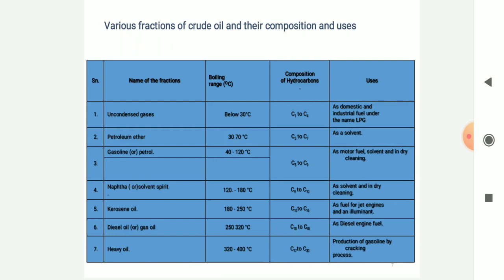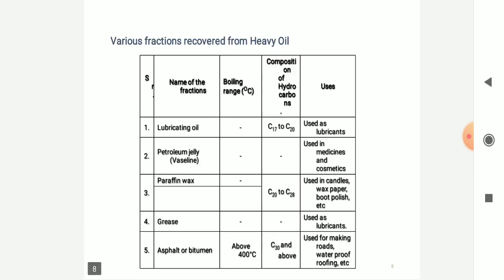Various fractions from crude oil are collected and used in different manners. The tabulated form shows non-combustible gases, petroleum ether, gasoline, naphthalene, and kerosene. The viscous fractions obtained from heavy oil — that is lubricating oil, petroleum jelly, and paraffin wax — are hydrocarbons with their particular uses. Lubricating oil is used in lubrication, petroleum jelly is used in medicine and chemical industries, while paraffin wax and greases are used as lubricants and wax may be used in boot polish, etc.